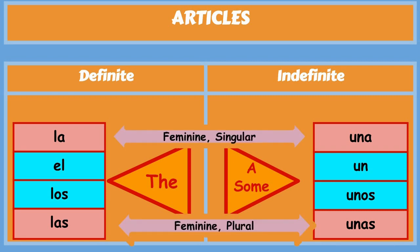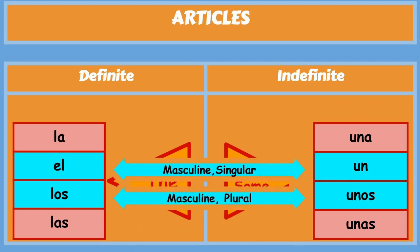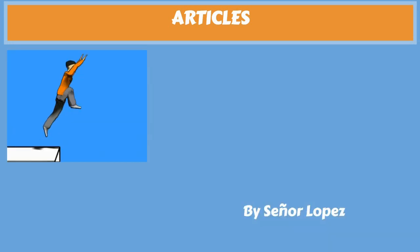Now remember, la and una are feminine singular, and las and unas are feminine plural, while el and un are masculine singular and los and unos are masculine plural. I hope you learned something today.